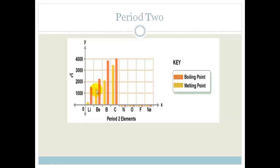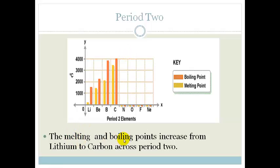And note we're only talking now about the metals: lithium, beryllium, boron. Remember carbon is kind of an interesting one. It is a non-metal, but it is also a non-metal that conducts electricity, so it's a little bit weird. Okay, so the melting and boiling points increase from lithium through to carbon across period 2.